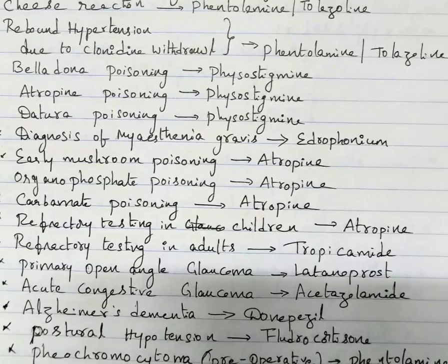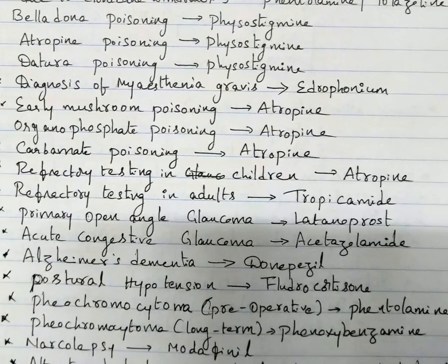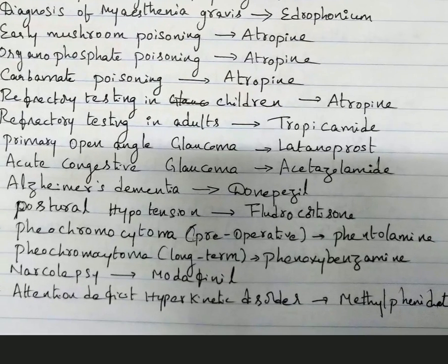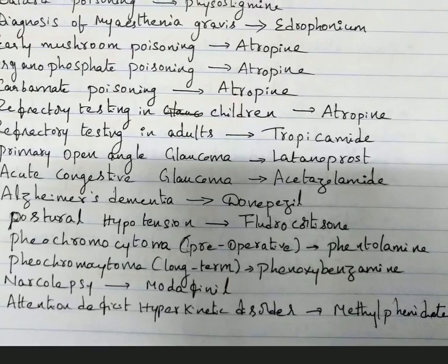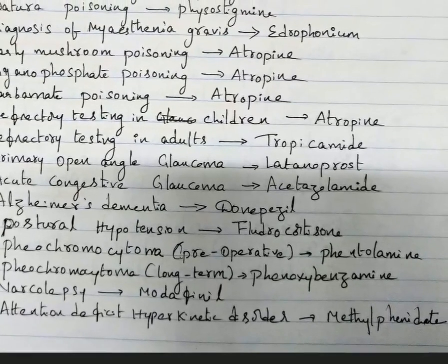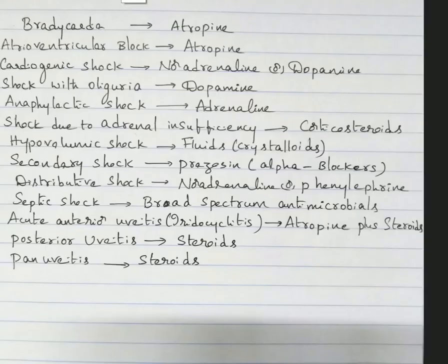Refractory testing in children — atropine; in adults — tropicamide eye drops. Primary open angle glaucoma — latanoprost. Acute congestive glaucoma — acetazolamide. Alzheimer's dementia — donepezil. Postural hypotension — fludrocortisone. Pheochromocytoma preoperative — phentolamine; long-term — phenoxybenzamine. Narcolepsy — modafinil. ADHD — methylphenidate.